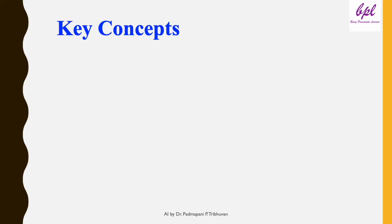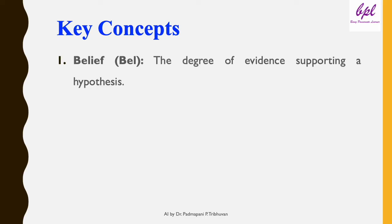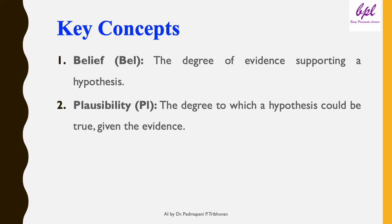Now let's dive into the key concepts of DST. Belief is the degree of evidence supporting a hypothesis — it represents the support that evidence provides to a hypothesis. Then possibility: possibility is the degree to which a hypothesis could be true given the evidence. It measures how much we cannot disprove the hypothesis based on the available evidence.